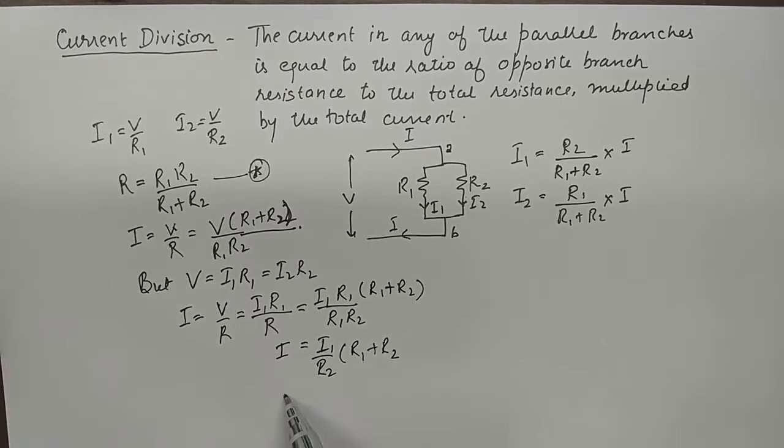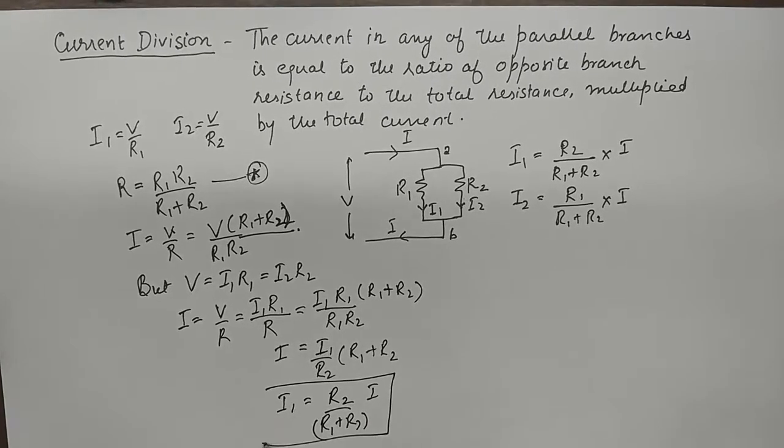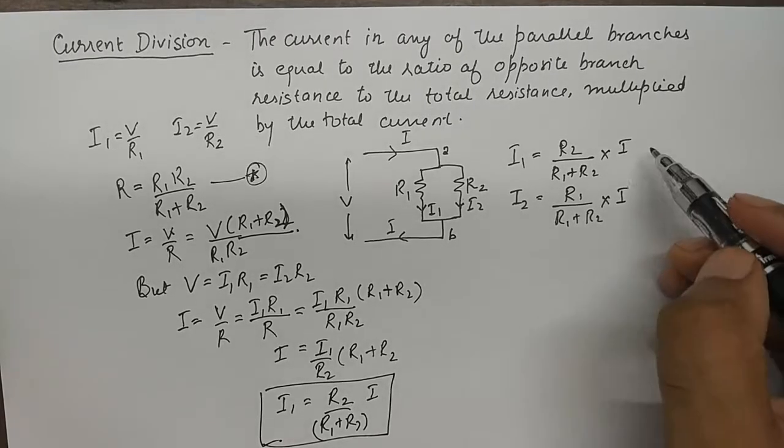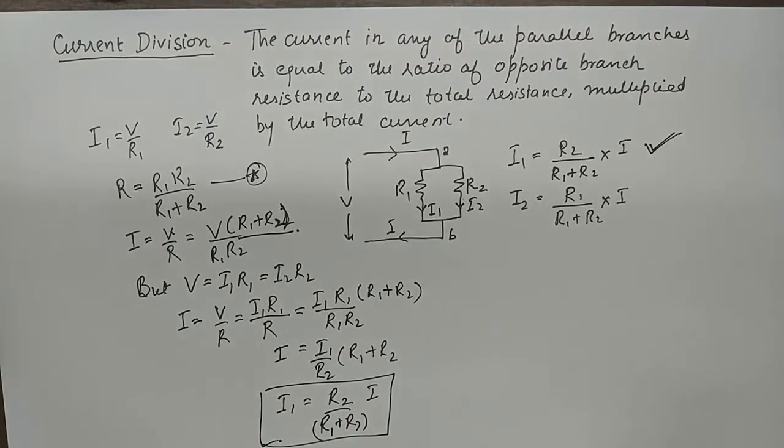Now if I was to find I1 from here, it will be R2 upon R1 plus R2 into I, which clearly is this equation or the current division rule.